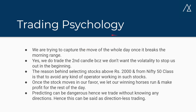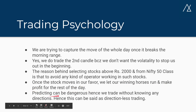Trading psychology covers the rationale behind this system. We are trying to capture the move of the whole day once it breaks the morning range. We trade the second candle because we don't want early volatility to stop us out. The reason for selecting stocks above 2,000 rupees from Nifty 50 is to avoid operator manipulation. Once the stock moves in our favor, we let our winning horses run for the rest of the day. Since predicting direction can be dangerous, we trade without knowing direction — this can be called directionless trading.